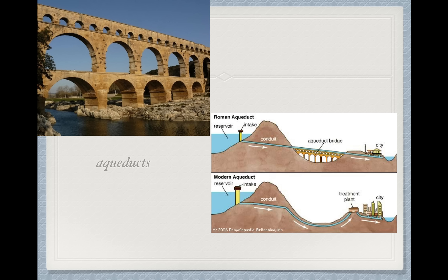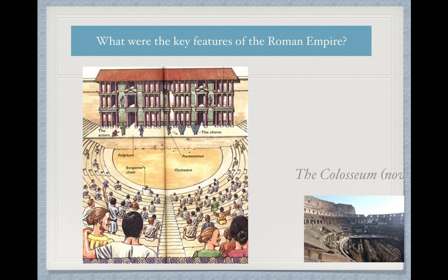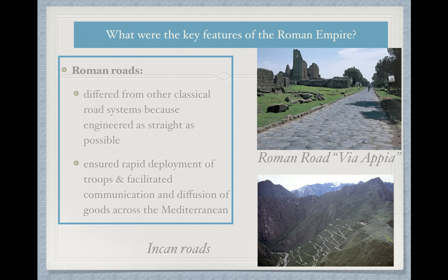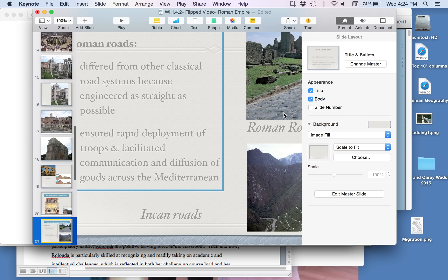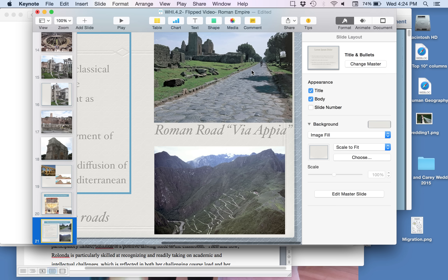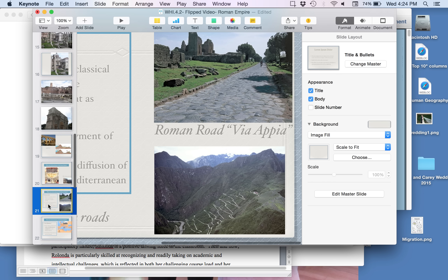The aqueducts were those man-made channels able to channel water. You find a reservoir of water; the conduit takes the water underground, and then the aqueducts are the actual bridges that continue channeling the water down. Notice that it's on a slope — your studies of algebra are not for nothing. The slope of the line is what ensures the water continues at an appropriate angle. The Roman roads were different from other classical road systems because they were engineered to be as straight as possible — rather than going through bumps and contours, Roman roads were extremely straight, ensuring rapid deployment of troops and facilitating communication and diffusion of goods across the Mediterranean. Roman roads were also built on a slope so the middle of the road is the highest point, allowing water to run off to the sides — which is still how roads are built today.